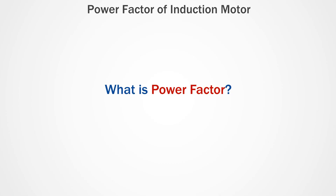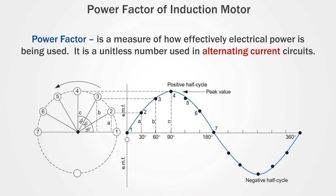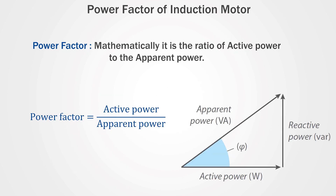What is power factor? Power factor is a measure of how effectively electrical power is being used. It is a unitless number used in alternating current circuits. Mathematically it is expressed as the ratio of active power to the apparent power.